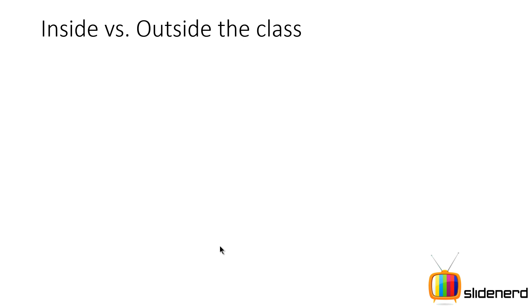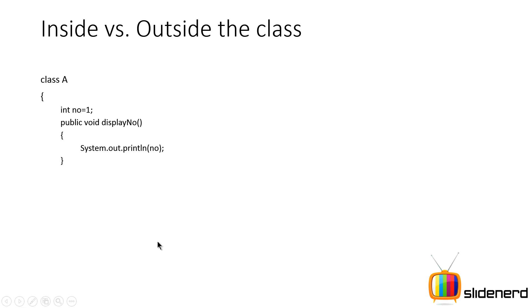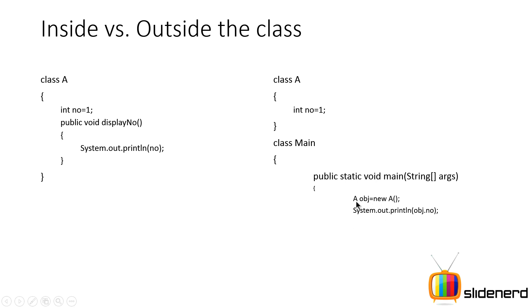Let's look at the difference between being inside and outside a class. Here is class A with an integer 'number' equals one and a method 'public void displayNumber'. Inside the class, to print the number I simply say 'System.out.println(number)'. Outside the class, I create an object with 'A obj = new A()' and then say 'obj.number' — that's the clear difference between being inside and outside the class.